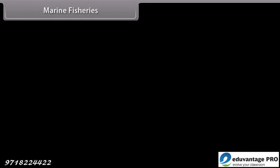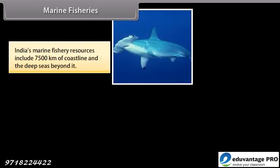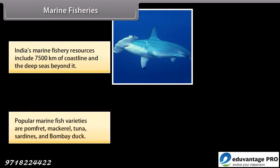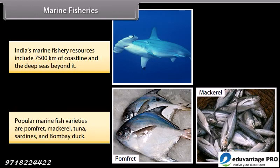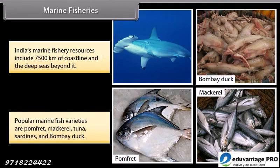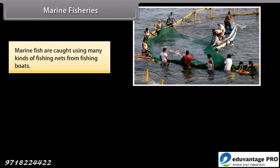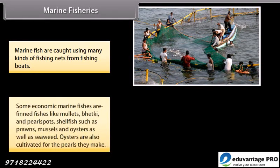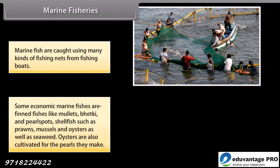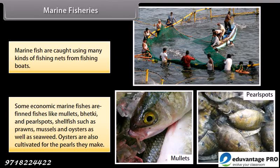Marine fisheries. India's marine fishery resources include 7,500 km of coastline and the deep seas beyond it. Popular marine fish varieties are pomfret, mackerel, tuna, sardines and Bombay duck. Marine fish are caught using many kinds of fishing nets from fishing boats. Some economically important marine fishes are finned fishes like mullets, bekti and pearl spots; shellfish such as prawns, mussels and oysters; as well as seaweed. Oysters are also cultivated for the pearls they make.